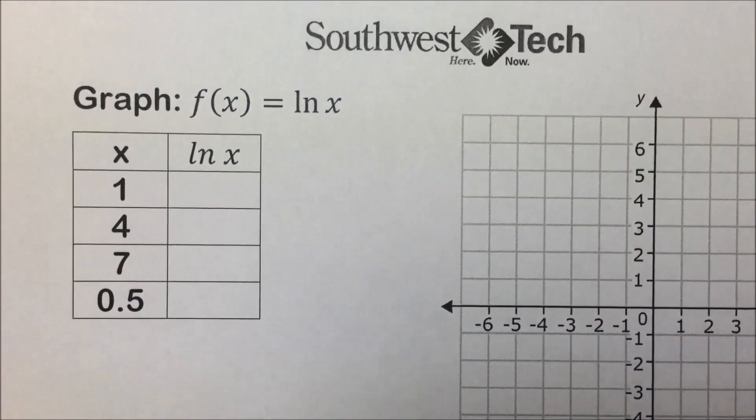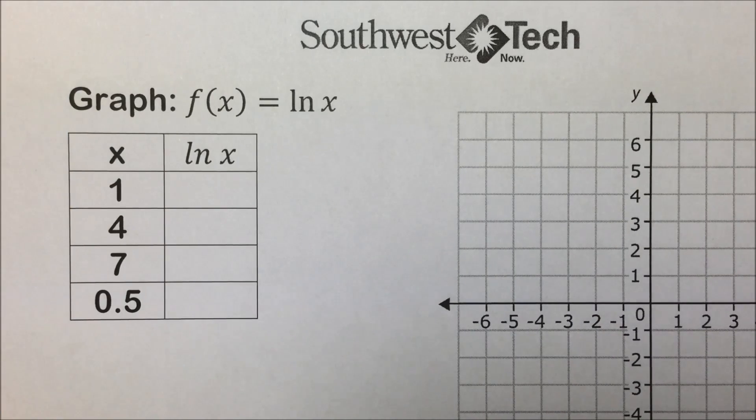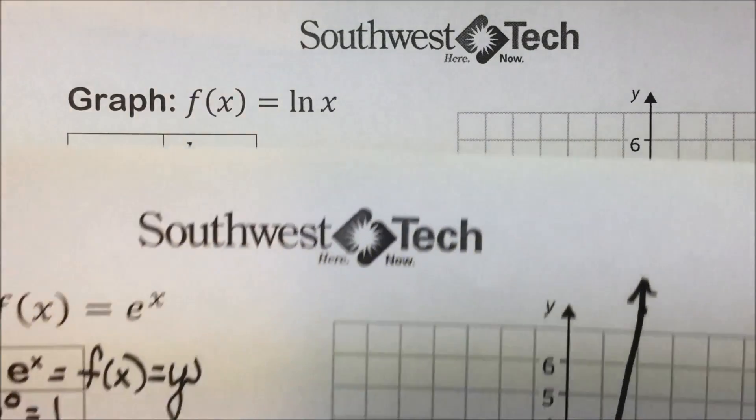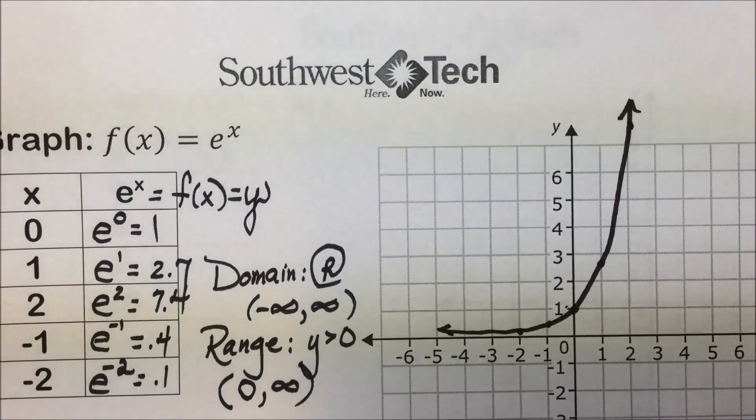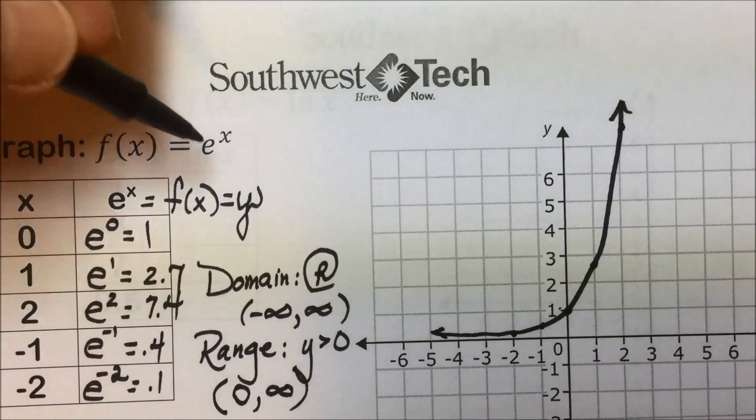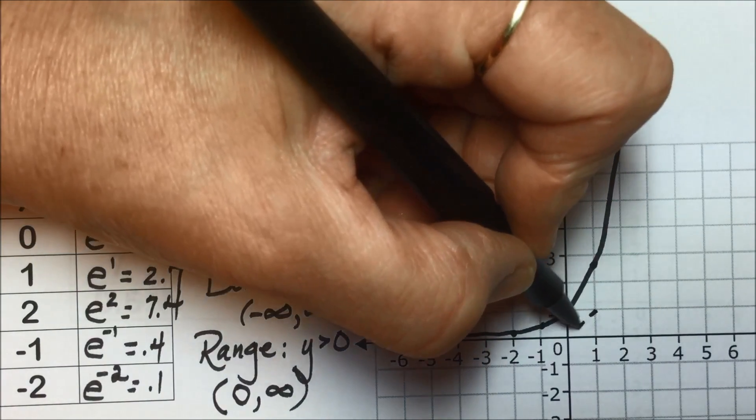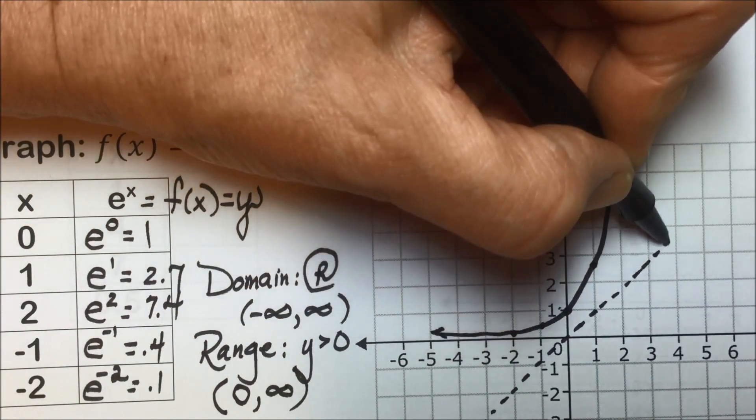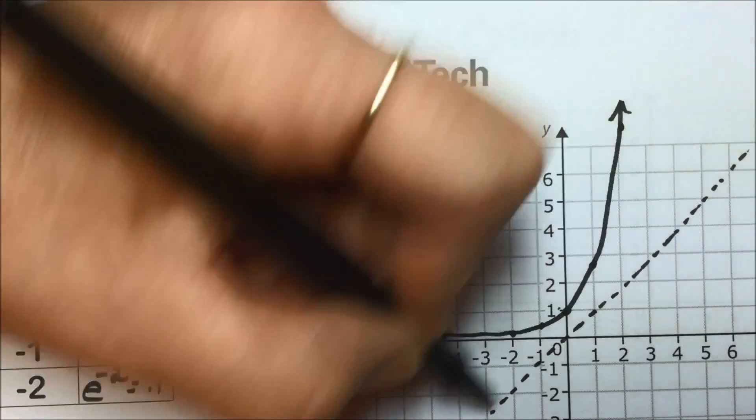Let's take a look at what a logarithmic function looks like. Since they're reciprocals of the exponential function, we should see, when we have an inverse function, we should see our reflection function of that function about the y equals x line.